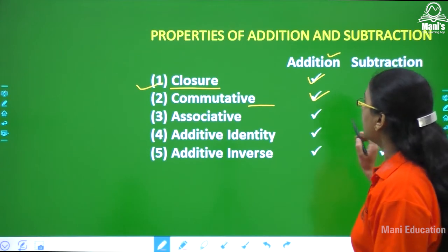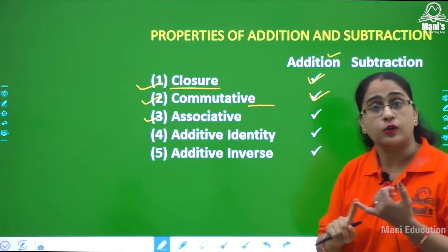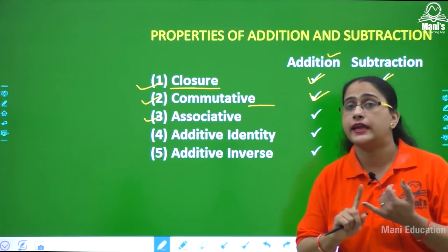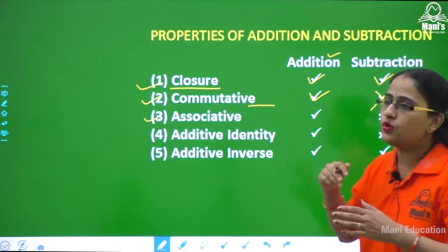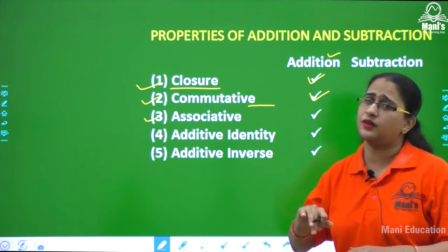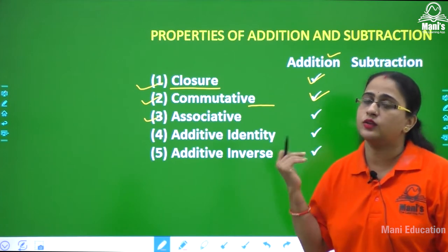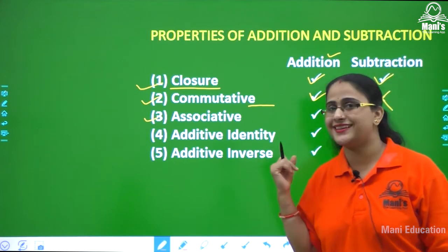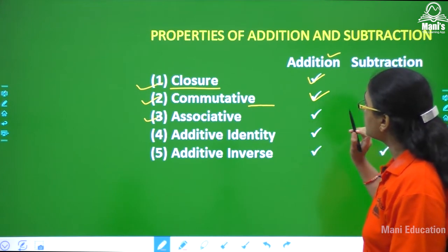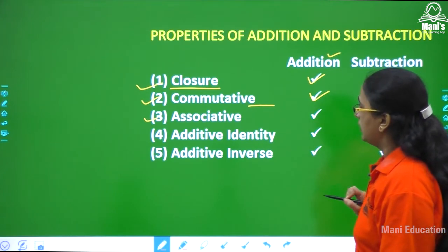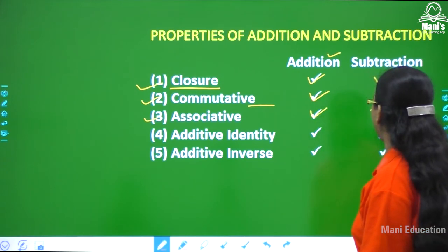Now, associative property. The closure property follows for both addition and subtraction. When you add or subtract two integers, you will always get some number — even if it is zero, that is still an integer. But for associative property, addition will follow and subtraction will not follow.